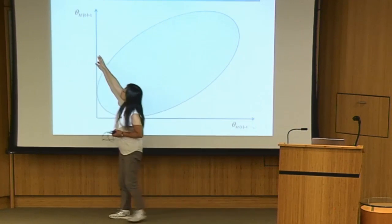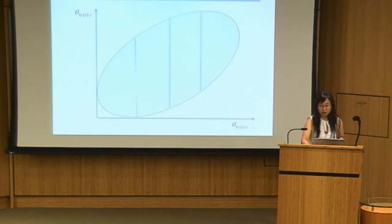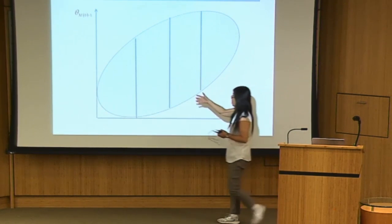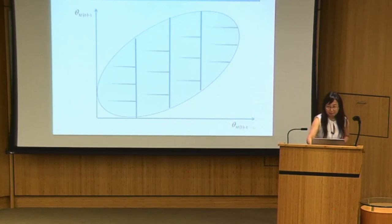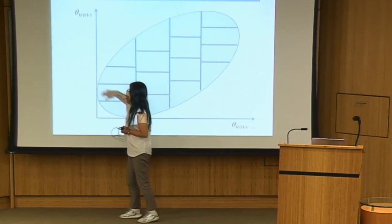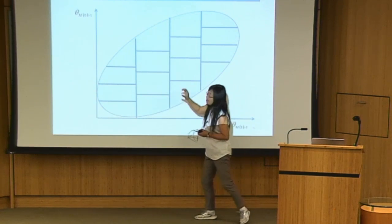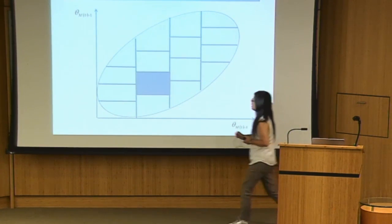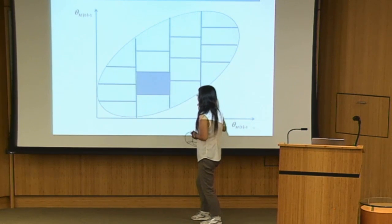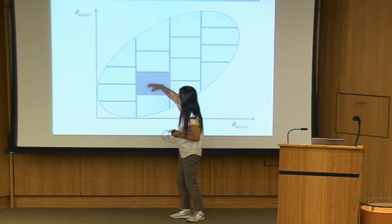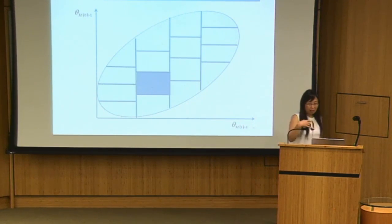Here's the illustration: everybody has a pair of propensity scores — propensity of being employed under control and under treated conditions. We stratify along one dimension into, say, four groups, then within each stratum, stratify again along the other propensity score. With 4×4 stratification, we have 16 cells. Within each cell, people are relatively homogeneous in both propensity scores, so they are much more similar to each other than in the full sample.